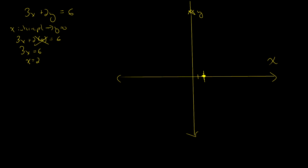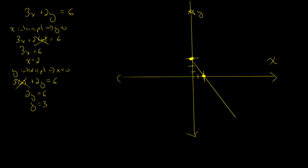Now I want to find the y-intercept. That's where x equals zero. So I put zero in for x and that term goes away, giving me 2y equals 6, or y equals 3. So the y-intercept is at y equals 3. I now have two points I can use to find my line. Let's look at Desmos and see what it looks like in the web browser.